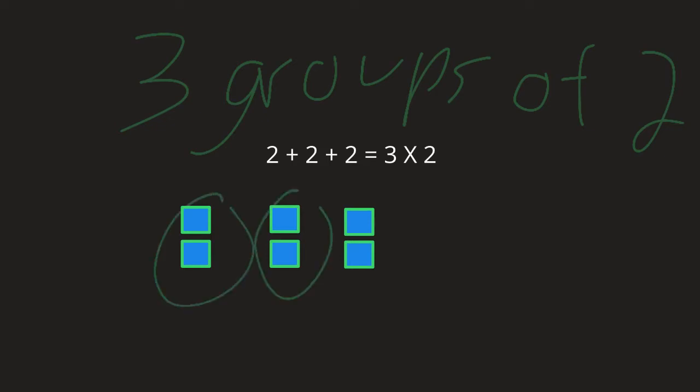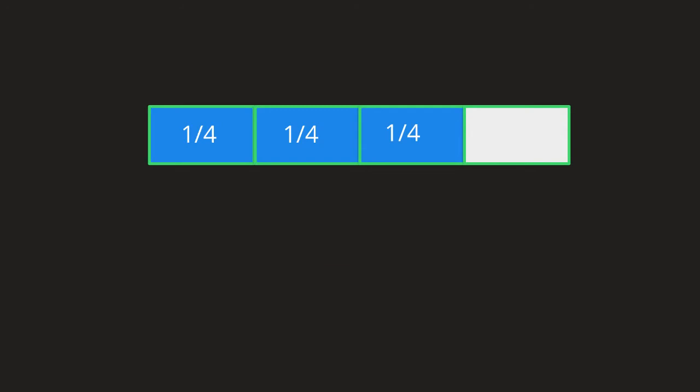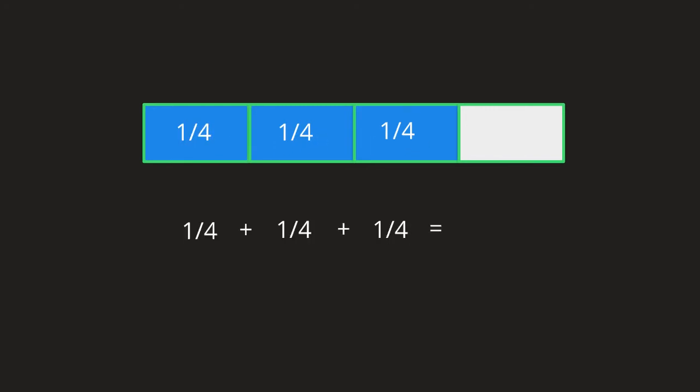Now all we have to do to understand this unit fraction thing is apply it to a fraction. So this entire rectangle is 1 whole, and we have broken it up into a fraction by cutting it into a certain number of pieces. Each of those pieces is 1 fourth, and we have 1, 2, 3 of them.